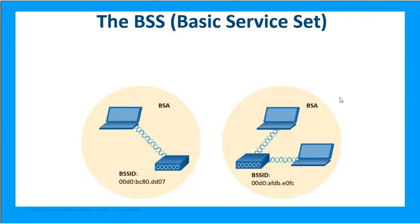Now we need a couple of new terms: BSS and ESS. BSS is Basic Service Set — it's used for providing wireless access to small deployments. A BSS includes a BSA, or Basic Service Area, which represents the extent of the wireless signal from an access point. The BSS ID is the Basic Service Set Identifier, which is the Layer 2 MAC address of your access point.